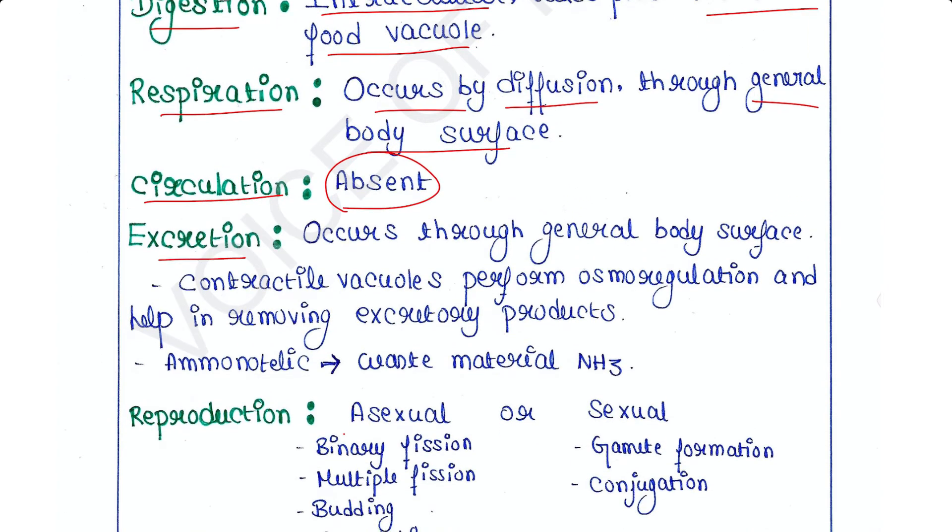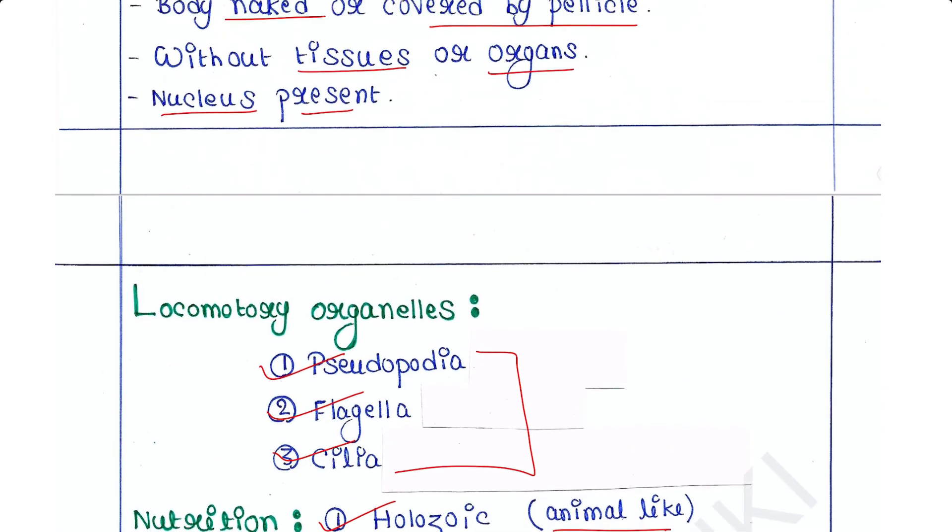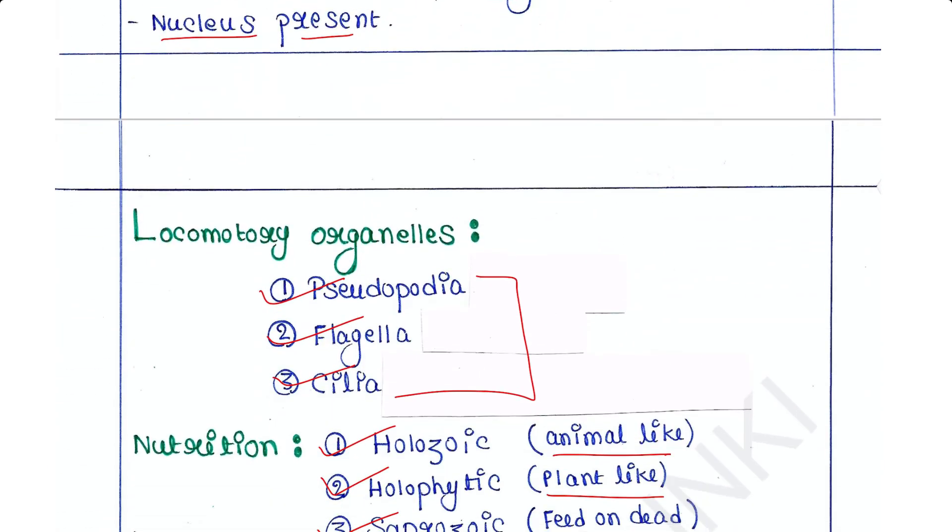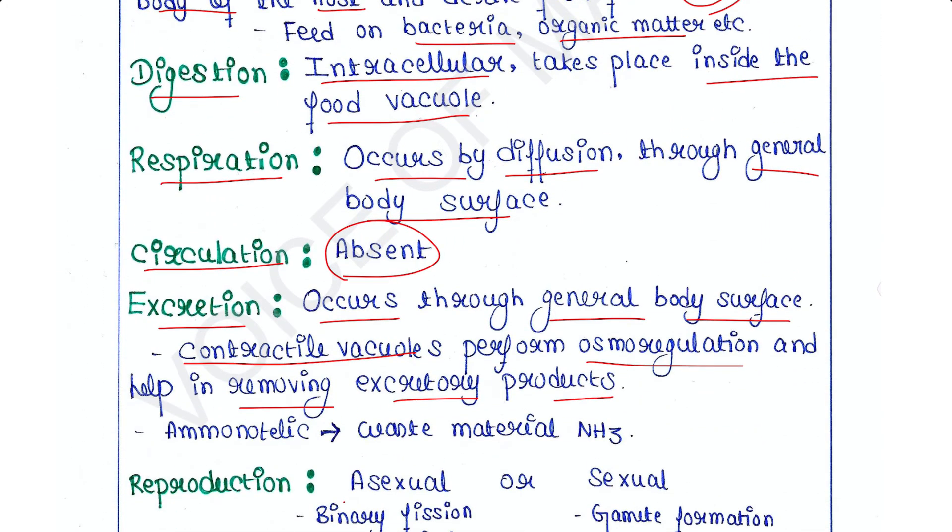Excretion occurs through general body surface, that means the excretion occurs via the cell. Contractile vacuoles are there which perform osmoregulation and help in removing excretory products. We can see contractile vacuoles here. They help in osmoregulation and also help in removing excretory products. These contractile vacuoles are analogous to our kidney. They are ammonotelic because the waste material is ammonia.